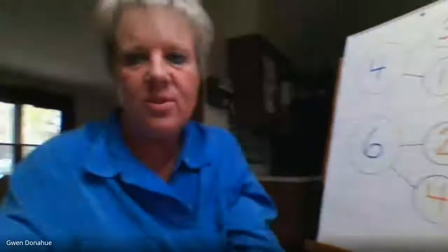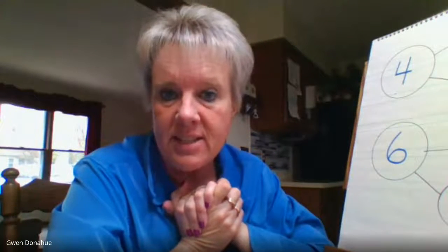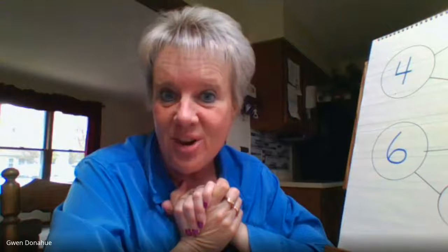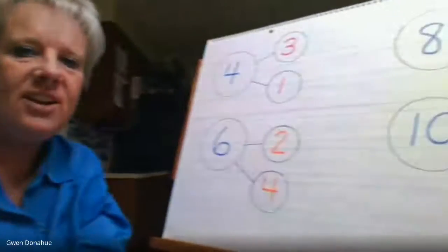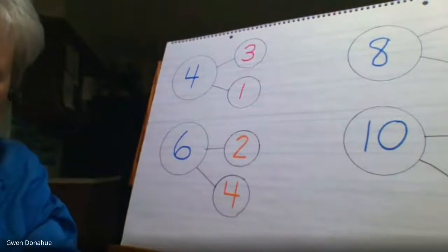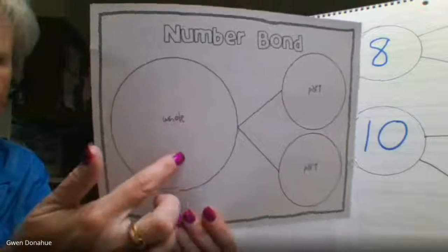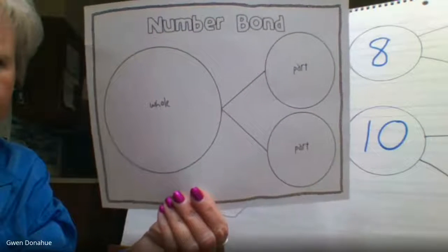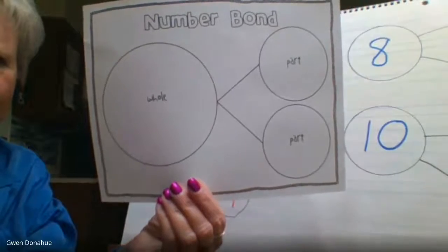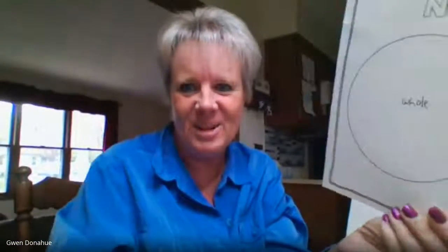Now, if you want more practice with that, have the adult that's helping you today set some of these number bonds up, or perhaps you could even draw them out yourself. So using your adding and subtracting skills, you should be pretty good at those number bonds. Remember the whole part's a little bigger. You're going to draw it. The circle parts are just a little bit smaller. So good luck with those number bonds.